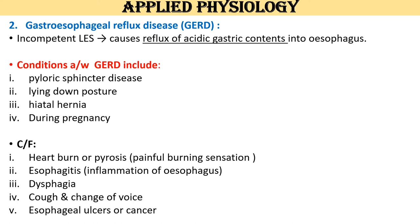Clinical features of GERD include: heartburn or pyrosis — a painful burning sensation; esophagitis from repeated excoriation of the esophagus by gastric acid; dysphagia or difficulty in swallowing; cough and change of voice in severe cases when thoracic structures are involved, possibly due to damage of the recurrent laryngeal nerve; and esophageal ulcers that can ultimately lead to cancer of the esophagus.